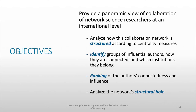The objective of this paper is to provide a panoramic view of collaboration of network science researchers at an international level. The specific objectives are: first, to analyze how the collaboration network is structured according to centrality measures; second, to identify the groups of influential authors and how they are connected and which institutions they belong to; and lastly, to rank the authors' connectedness and influence and to analyze the network's structural holes.